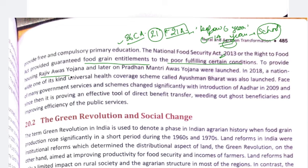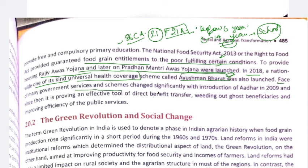For housing, Rajiv Awas Yojana was followed by Pradhan Mantri Awas Yojana. In 2018, Ayushman Bharat was launched as a nationwide universal health coverage scheme. The introduction of Aadhaar significantly changed the delivery of many government services and schemes — it made Direct Benefit Transfer much easier, helped weed out ghost beneficiaries, and improved the efficiency of public services.